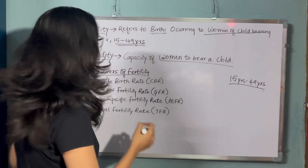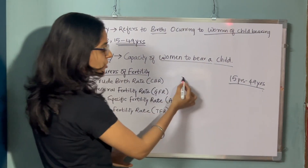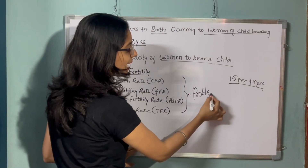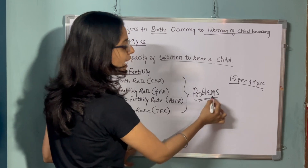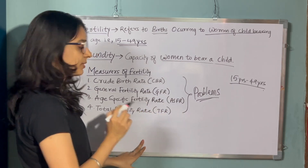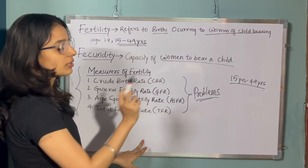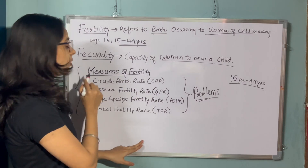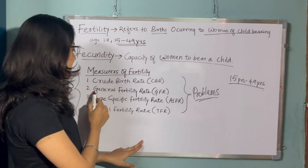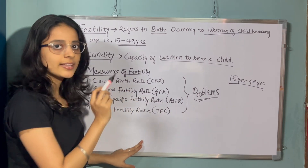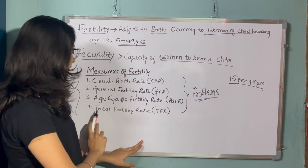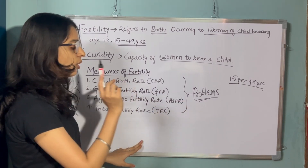Here we have different measurements of fertility, and based on these we have different problems which are very important from the examination point of view. The first concept is crude birth rate (CBR). We also have general fertility rate (GFR), age specific fertility rate (ASFR), and total fertility rate (TFR). We will look into each concept separately.